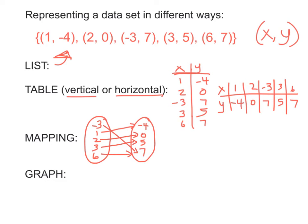Lastly, you might see a graph of the data. A graph would show points as coordinate pairs. So 1, negative 4 would be here; 2, 0 would be here; 3, 5 would be here; and 6, 7 would be here — approximately. So those are different ways we can represent data.